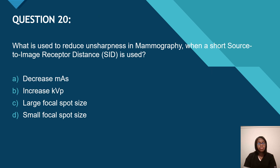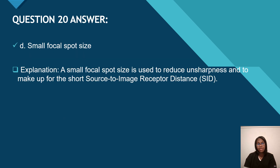Question 20: what is used to reduce unsharpness in mammography when a short source to image receptor distance (SID) is used? Is it decreased mAs, increased kVp, large focal spot size, or a small focal spot size? A small focal spot size is the answer. A small focal spot size is used to reduce unsharpness and to make up for the short source to image receptor distance (SID).